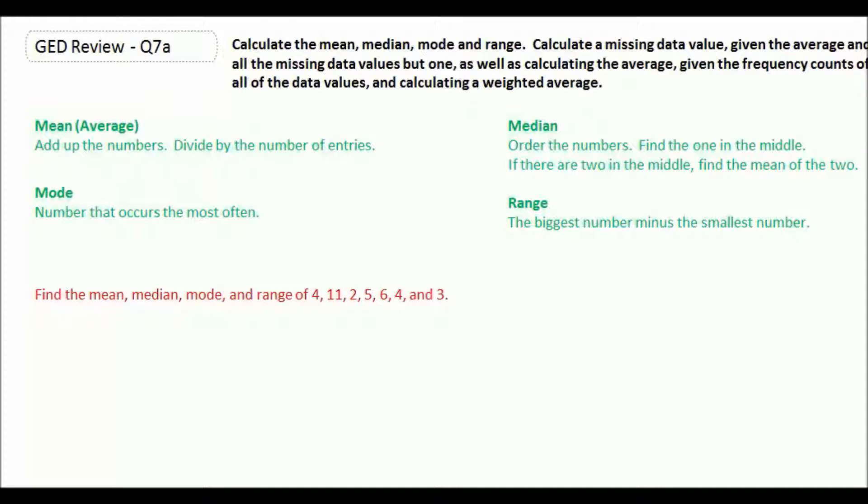The mode is the number that occurs the most often, and the range is the biggest number minus the smallest number. So we're going to find the mean, median, mode, and range of this set of data.